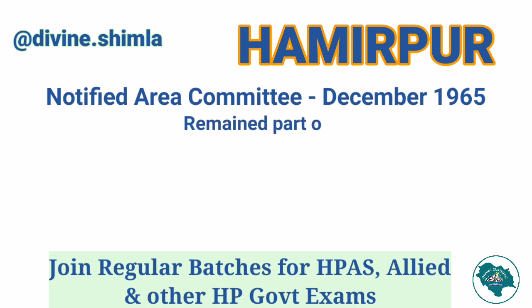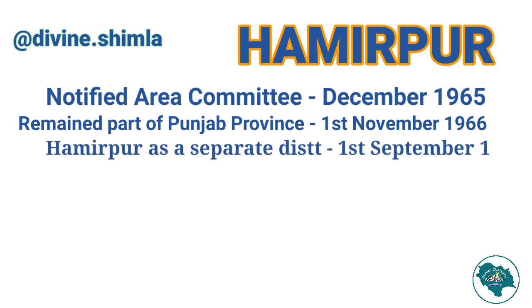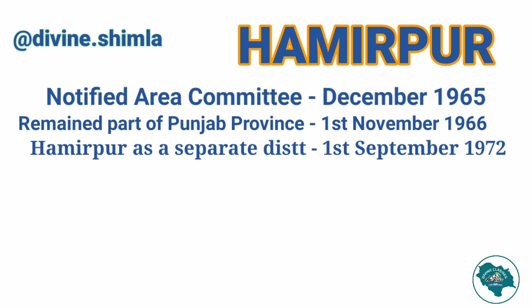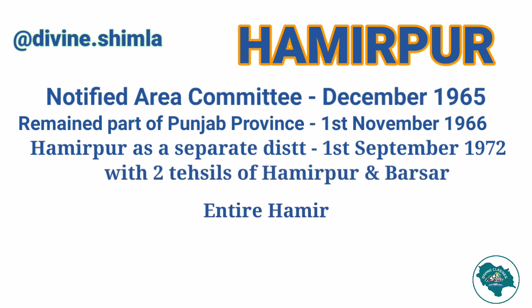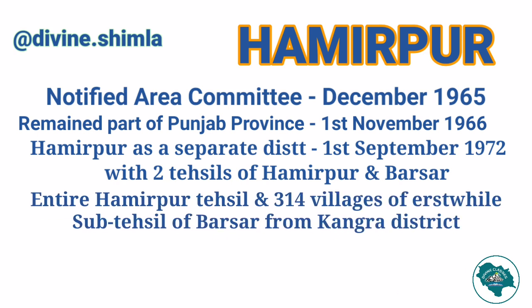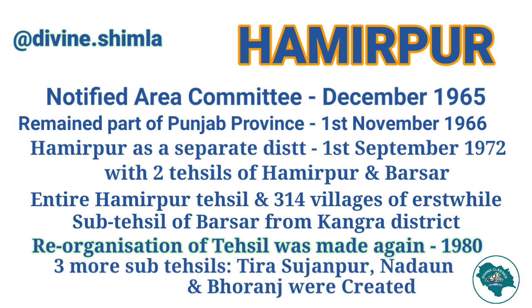This area remained part of Punjab province until 1st November 1966. On 1st September 1972, Hamirpur was created as a separate district with two Tahsils of Hamirpur and Barsar. The district was constituted by transferring the entire Hamirpur Tahsil and 314 villages of the erstwhile Sub-Tahsil of Barsar from Kangra district. The reorganization of Tahsils and Sub-Tahsils was made again in 1980, resulting in three more Sub-Tahsils of Tira Sujanpur, Nadan, and Bhoranj being created.